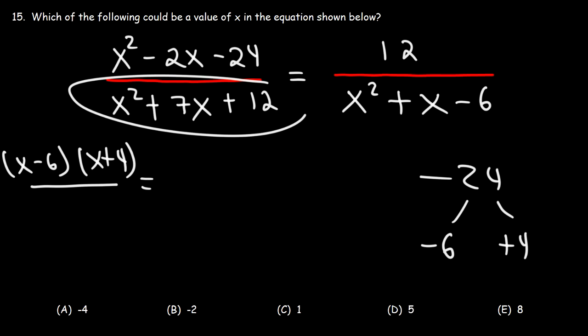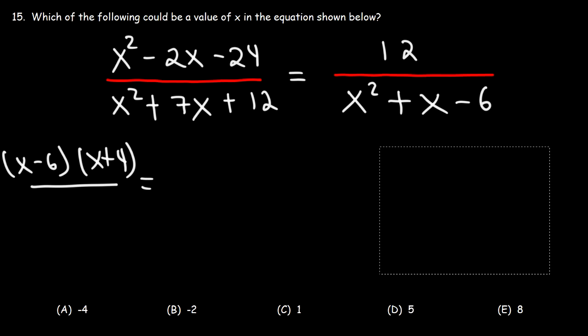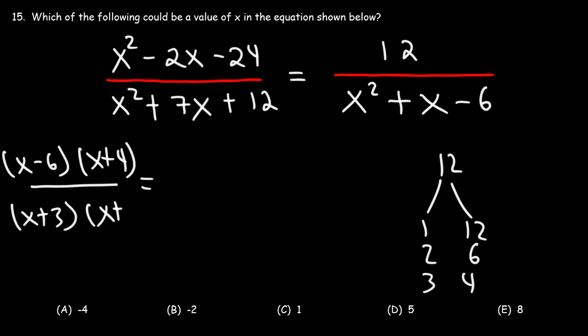Now, what about the trinomial on the bottom left? So what two numbers multiply to 12 but add to 7? Factors of 12 are 1 and 12, 2 and 6, 3 and 4. But 3 plus 4 adds up to 7. So it's going to be x plus 3 times x plus 4.